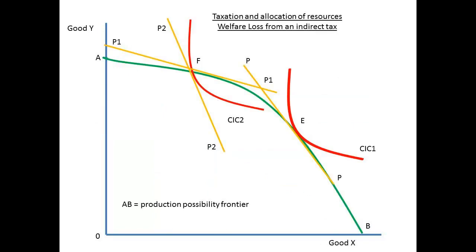The excess burden highlights inefficiency, which is further shown in this map. The pre-tax Pareto optimal equilibrium is at point E, where the community indifference curve, CIC1, is tangential to the production possibility frontier. An indirect tax on good x will shift the price to consumers to P2P2. Production moves to point F, and the community indifference curve to CIC2, which is lower than CIC1.